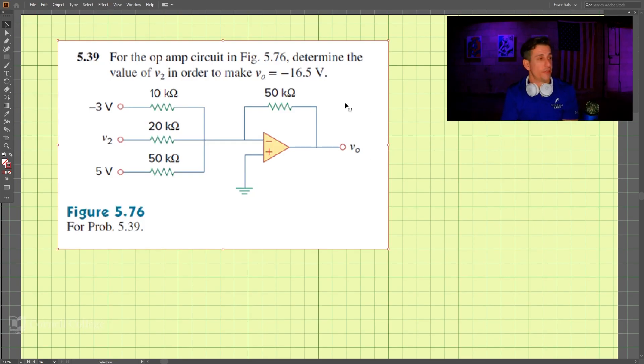This is 539, and we have three inputs here. We're to determine the value of V2 in order to make Vout negative 16.5 volts. So what is V2?